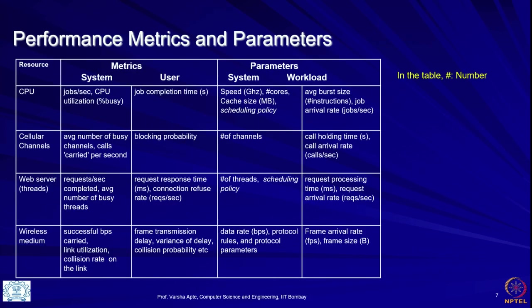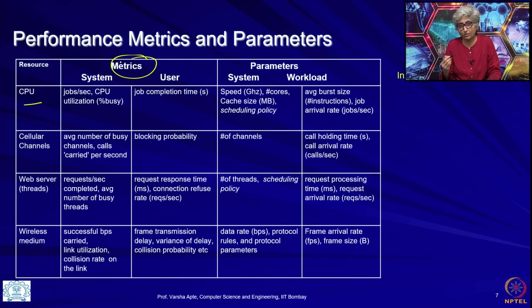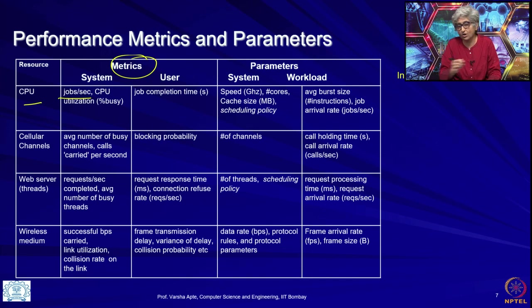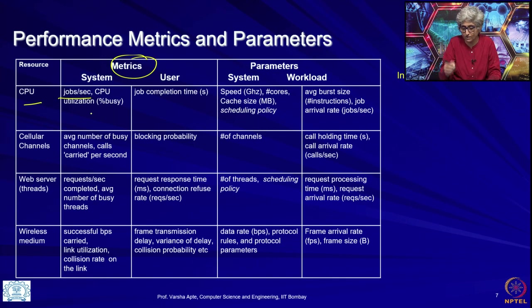Let us look at the full table of various metrics and parameters. For CPU, the resource owner will think in terms of jobs per second processed. In a high performance computing system where large jobs are submitted for processing, the owner wants more jobs per second because they may be renting the system and make more profit with higher throughput. So as a system owner you always want CPU utilization — the percent of time it is busy — to be high, otherwise it is a wasted resource.